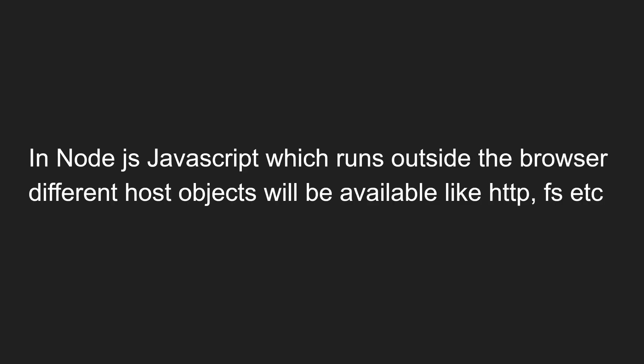For example, in Node.js — JavaScript which runs outside the browser on the server — different host objects will be available. If you run JavaScript outside the browser, something like Node.js, you will have host objects like HTTP, file system (FS), path, and similar modules.